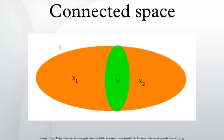For example, take two copies of the rational numbers Q and identify them at every point except zero. The resulting space, with the quotient topology, is totally disconnected. However, by considering the two copies of zero, one sees that the space is not totally separated. In fact, it is not even Hausdorff, and the condition of being totally separated is strictly stronger than the condition of being Hausdorff.